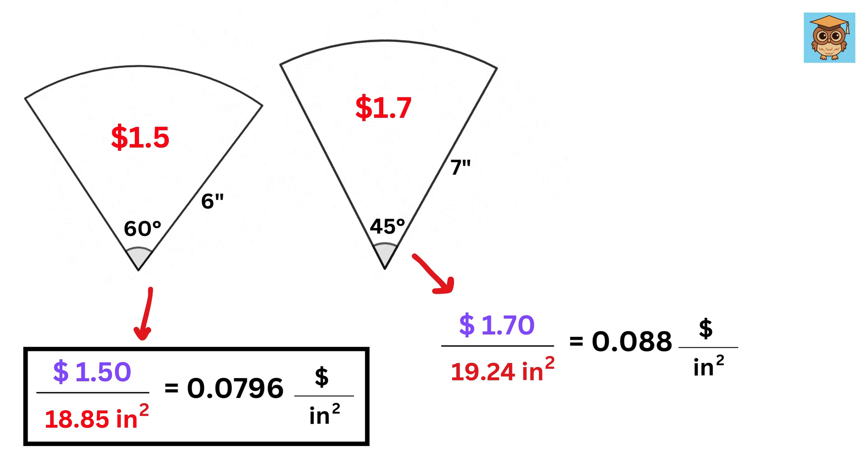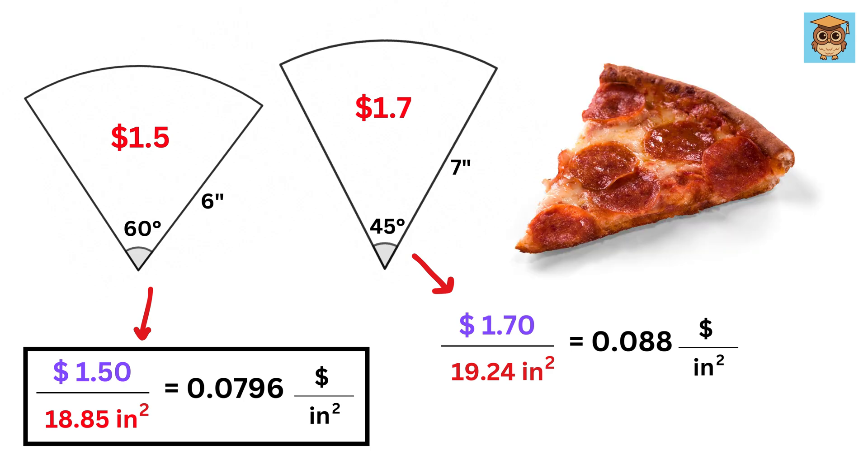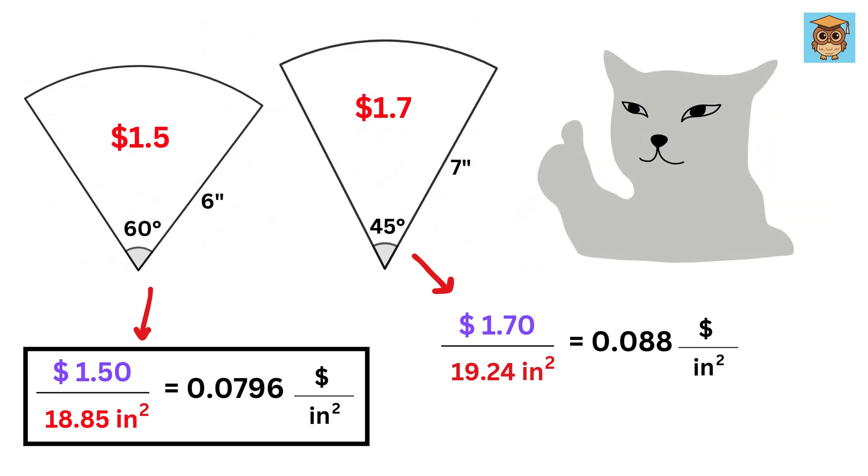Now on paper, the first one is a better deal. But we can't forget that a larger angle means more crust. So should we look at the ratio of crust to non-crust as well? So good!